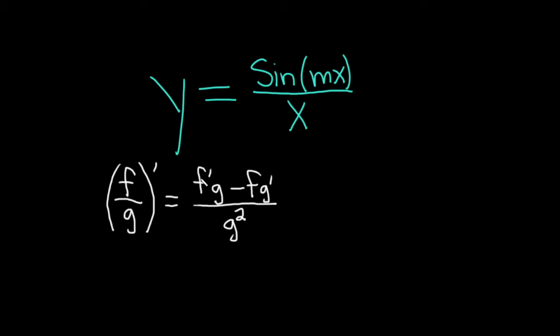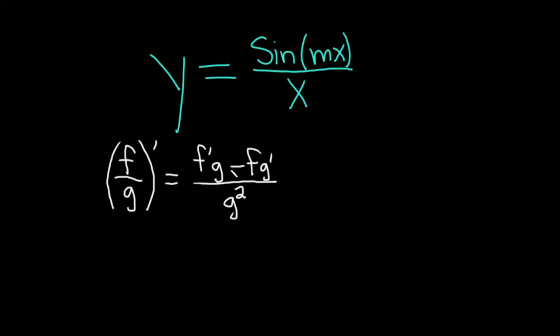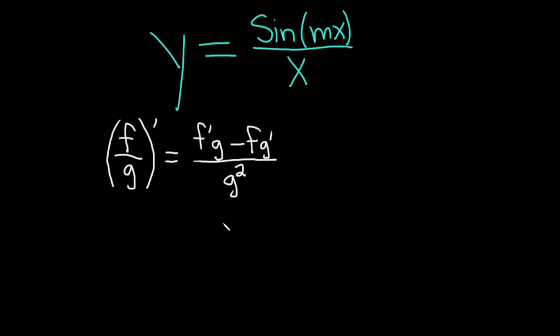So again, the derivative of the top times the bottom minus the top times the derivative of the bottom over the bottom one squared. Okay, so our top function is obviously sine mx and our bottom function is x. Let's go ahead and apply this formula to this problem.